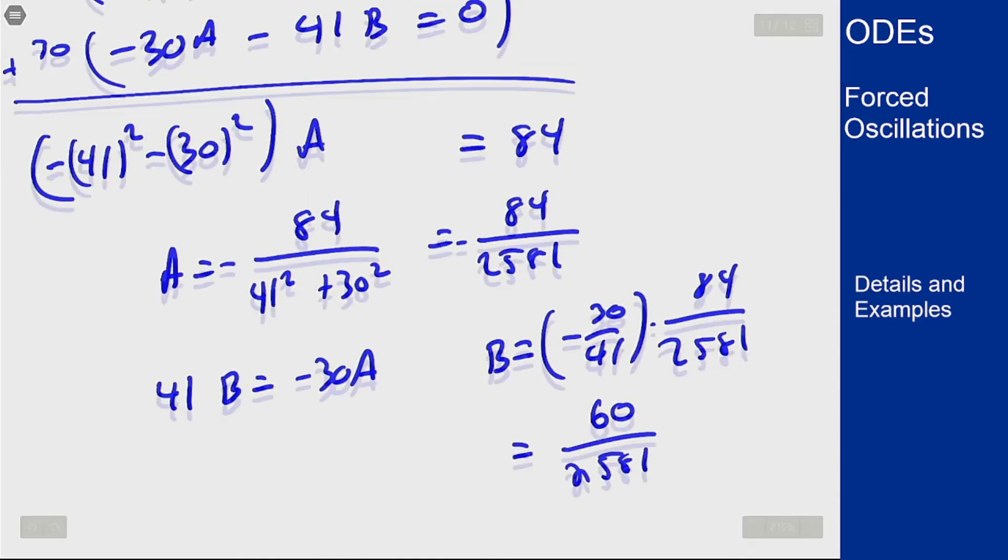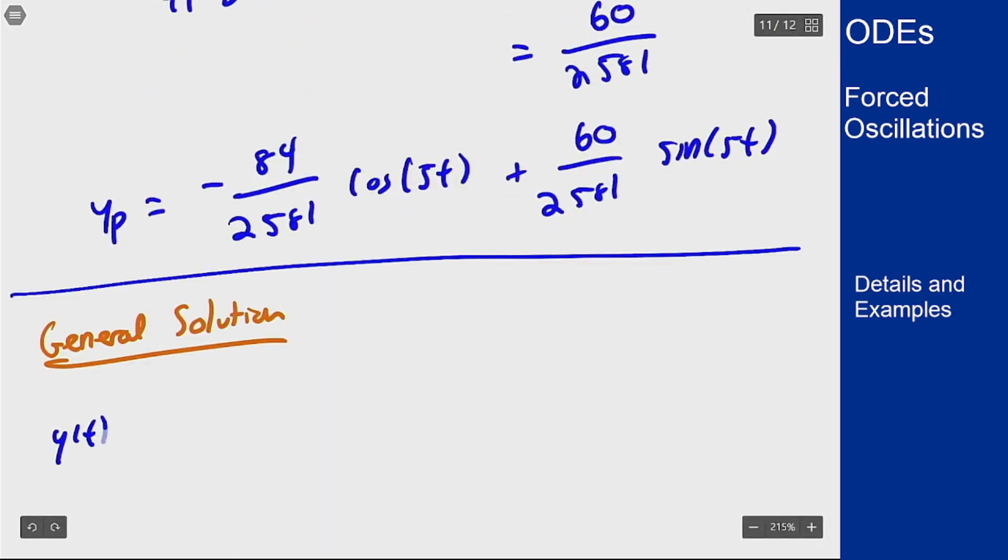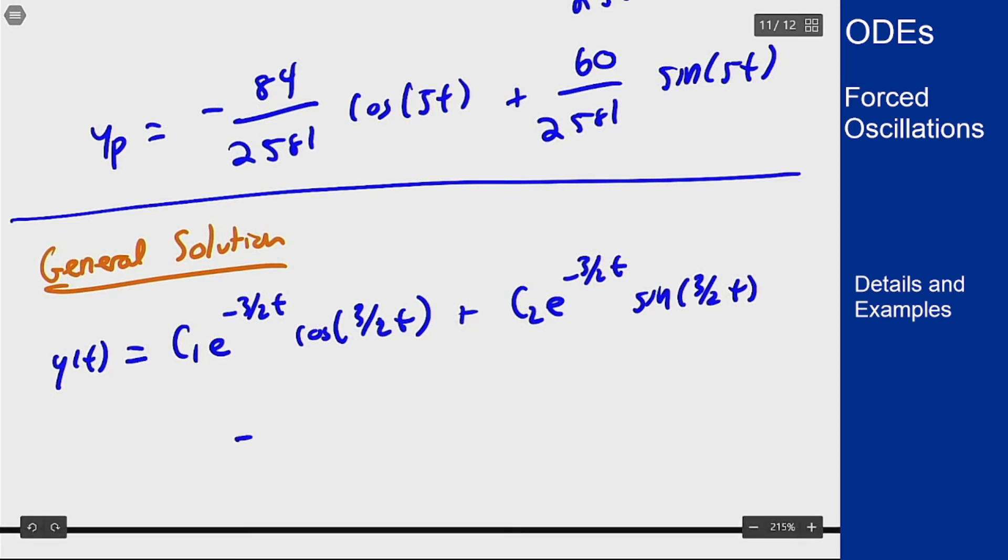Therefore our particular solution y_p is going to be negative 84 over 2581 cosine of 5t plus 60 over 2581 sine of 5t. Our full general solution is our homogeneous part, c1 e to the minus 3/2 t cosine of 3/2 t plus c2 e to the minus 3/2 t sine of 3/2 t, and then our non-homogeneous part, negative 84 over 2581 cosine of 5t plus 60 over 2581 sine of 5t.